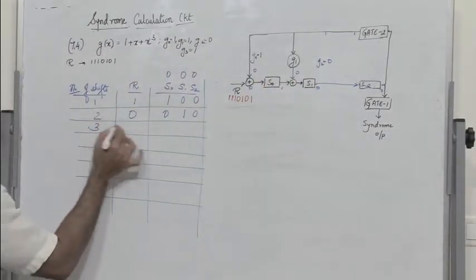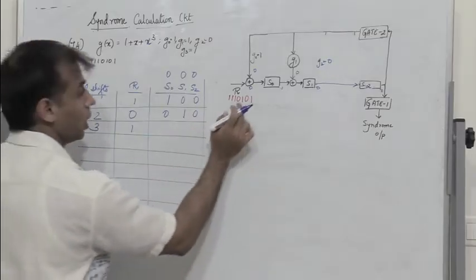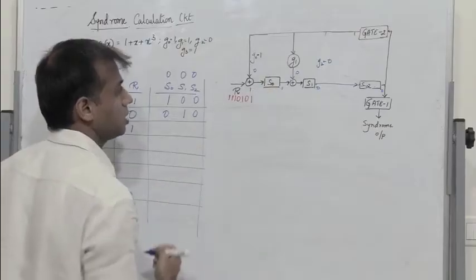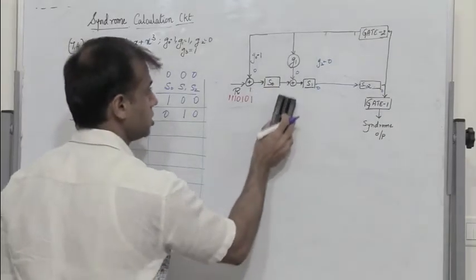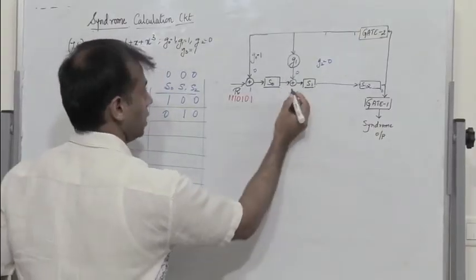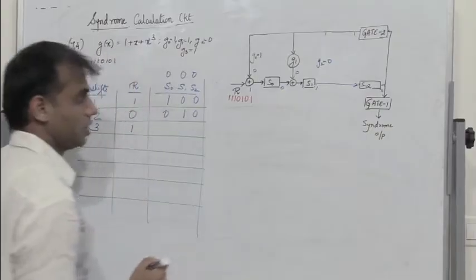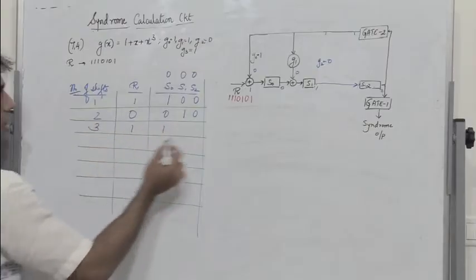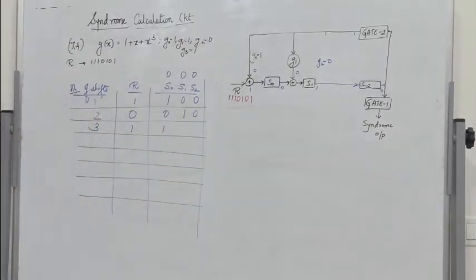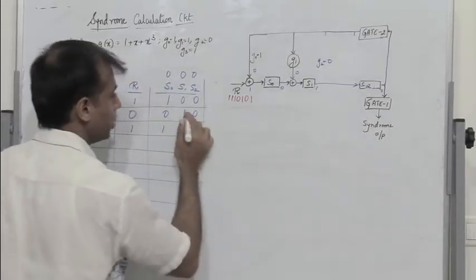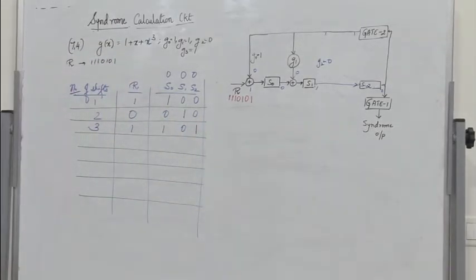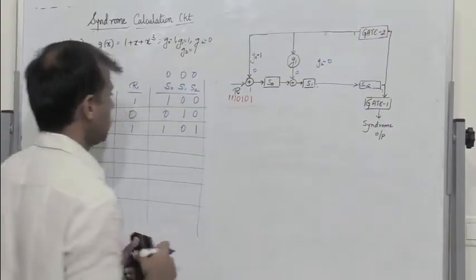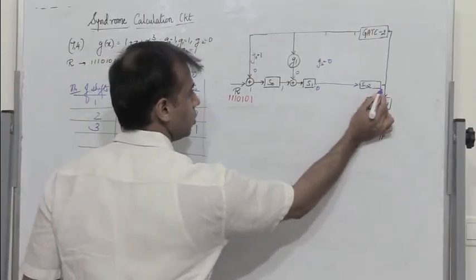During shift 3, the received bit is 1. With the feedback 0, the input to S0 is 1 XOR 0 = 1. S1 receives the previous S0 output, which is 0, so 0 XOR 0 = 0. S2 takes the previous state of S1, which is 1. After shift 3, the outputs of S0, S1, S2 are 1, 0, 1, and there is a 1 in the feedback path.